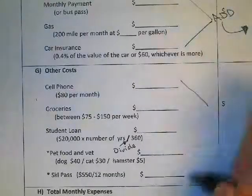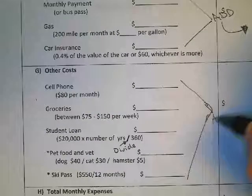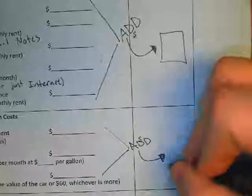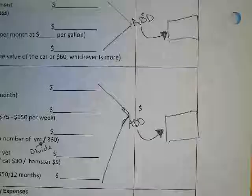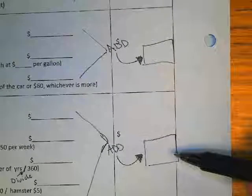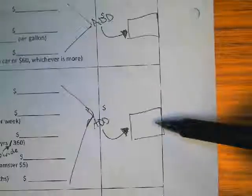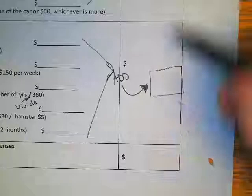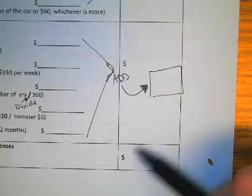Once you find all of these, add them up and put that number here as your other costs subtotal. Now with your three subtotals — housing, transportation, and other costs — you'll need to figure out what to do with these three numbers to find your total monthly expenses. Once you figure that out, that final number goes down here at the bottom.